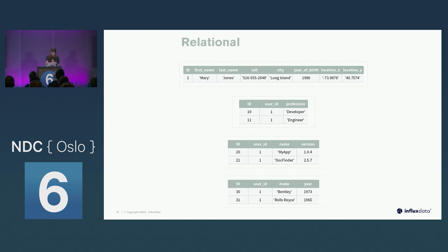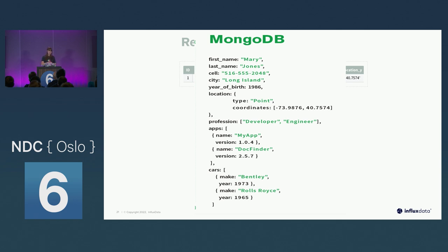For example, in a relational database you'd have all these different columns in separate tables. This is how it might look in a document database — from MongoDB's example — where all the data is stored basically in a JSON object. All the data is a little bit more together and a lot more flexible. It'd be really easy to delete the car field and add a different one, or change a year someone entered incorrectly. That's one of the real highlights of document databases: their overall flexibility.